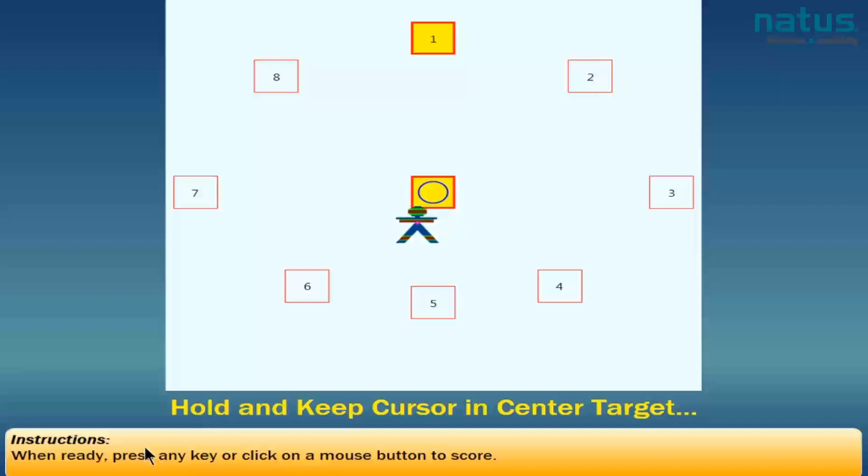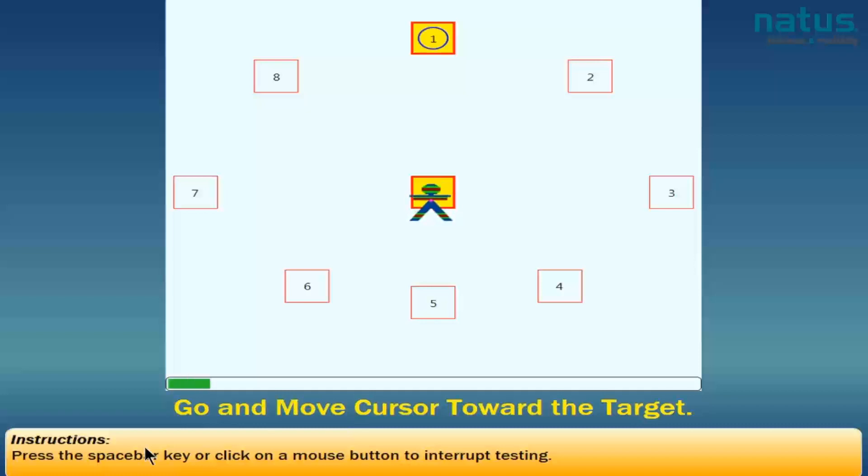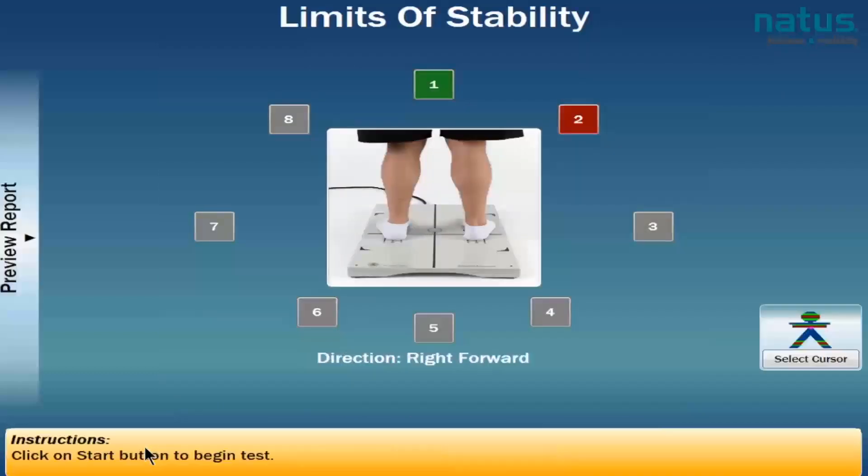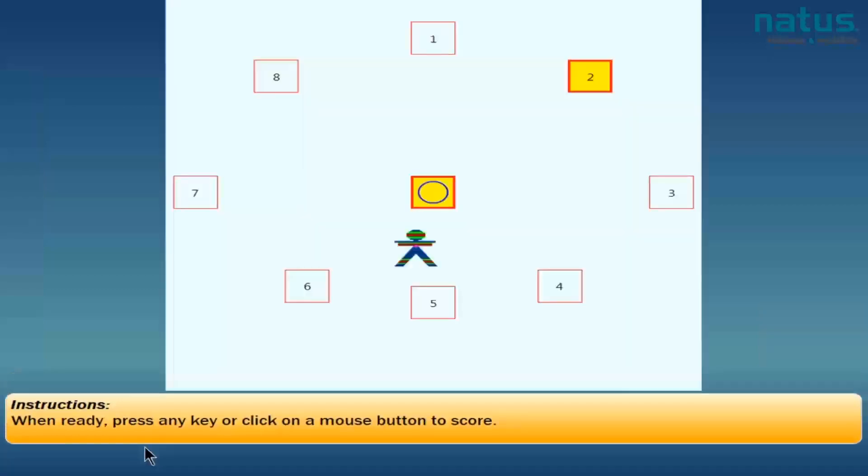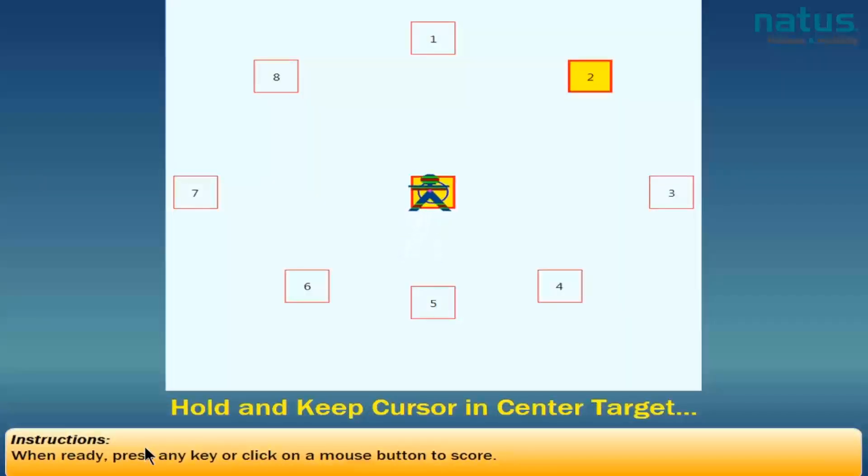Are you ready? I'm ready. Okay. Start right in the center target and you're going to hold steady until you see the blue circle move. Great. And only go as far as you can hold comfortably and keep holding. Wonderful. And go ahead back into the center. That was great. We're going to do that same thing all the way around. It's very important that you start in the center square before you move to the next target. Hold steady in the center until the blue circle moves.